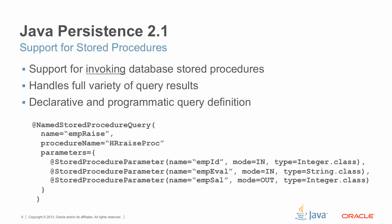We've also added support for stored procedures — support for invoking database stored procedures that already exist in the database. It's not a stored procedure definition capability. Stored procedures are notoriously database specific, both in their definition and in the way you access them and get back query results. JPA builds stored procedure support on top of that of JDBC, which provides an API for handling a full variety of query results — results passed back through output parameters, through in-out parameters, through result sets, or through some combination of all of these.